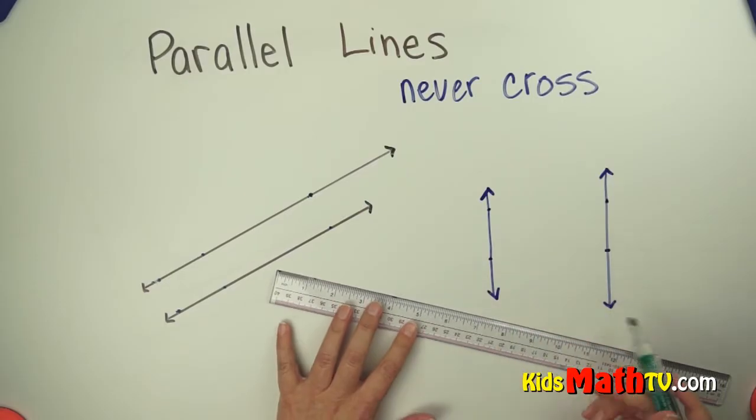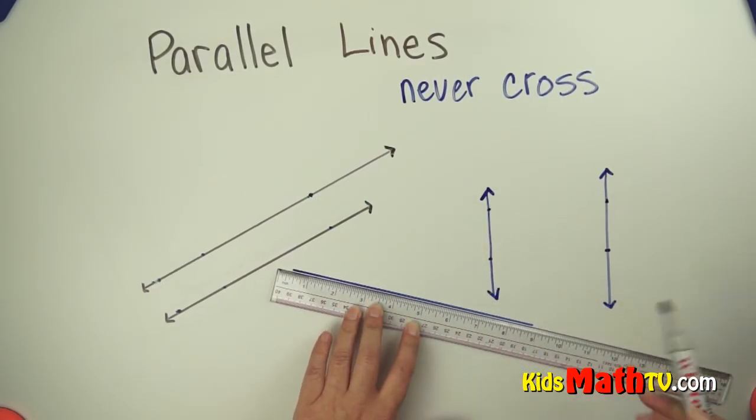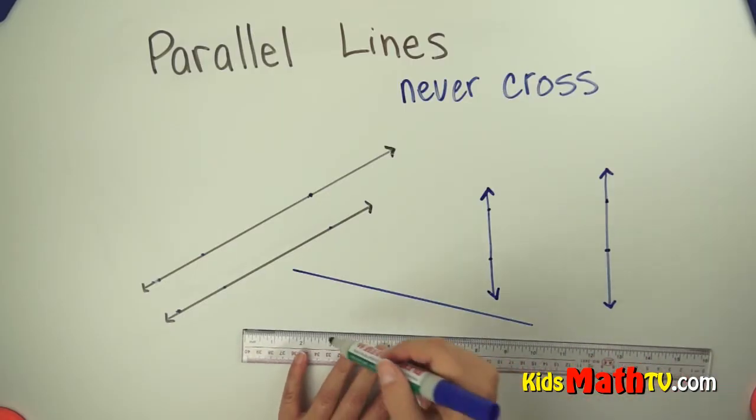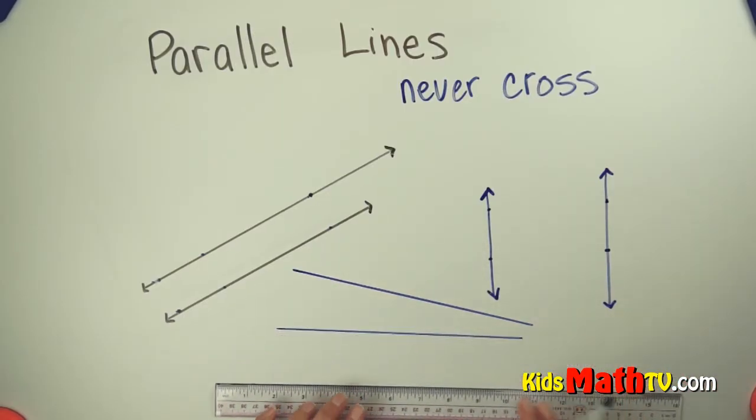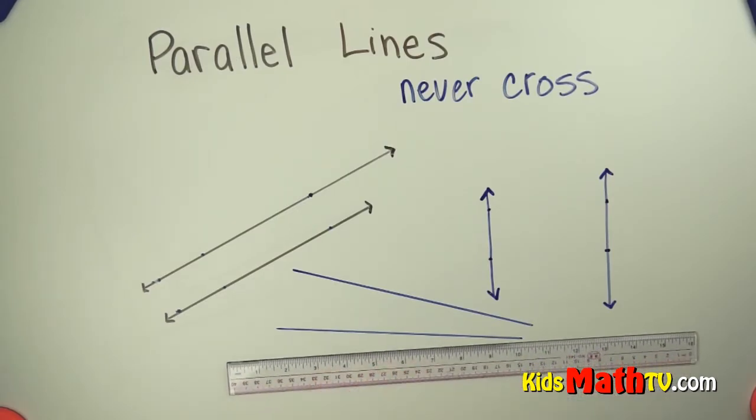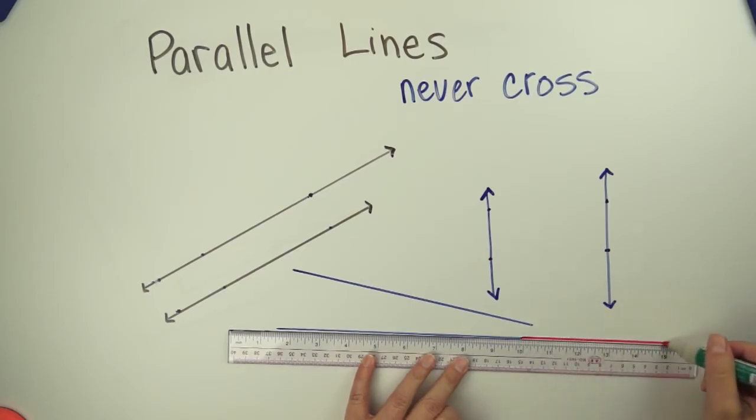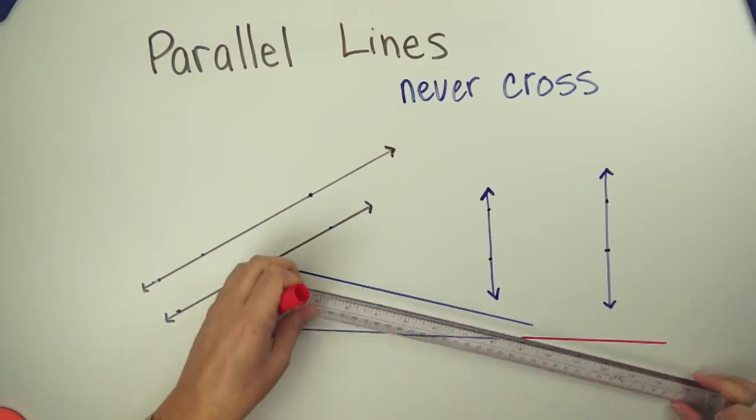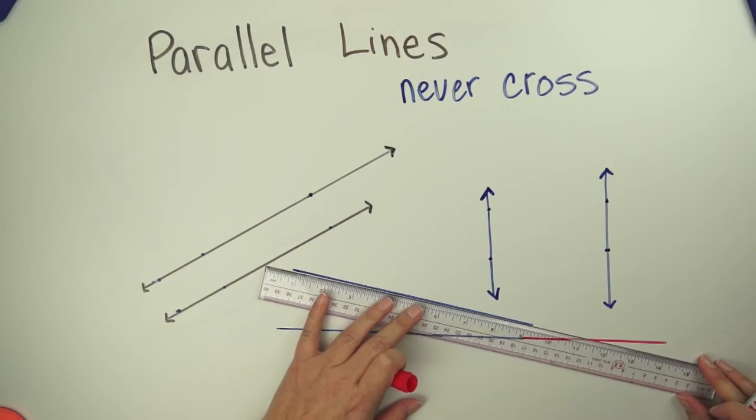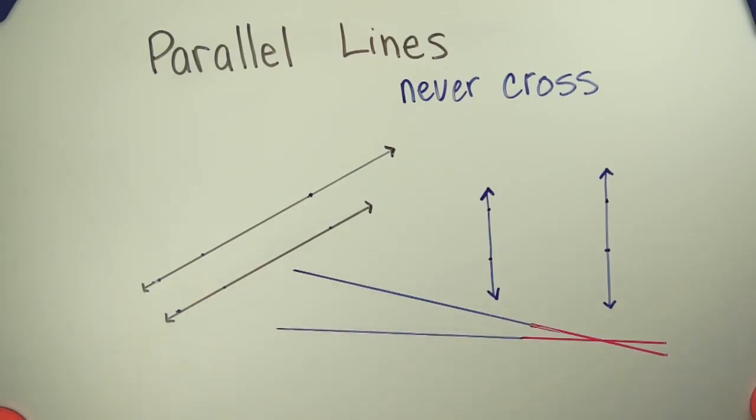If we want to make a quick set of non-parallel lines, there's a line. And here's a line. So as you can see, if we continue these lines out, they will eventually cross each other. So those two lines are not parallel lines because they do cross.